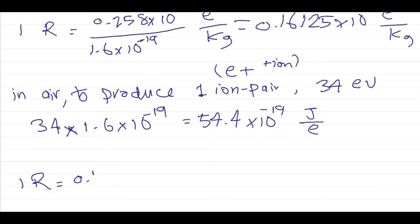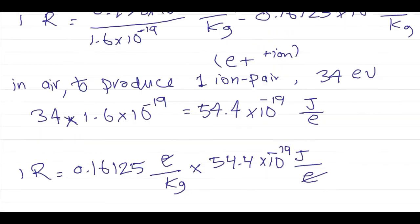We saw that equals 1.6125 times 10 to the 15 electrons per kilogram. So to get rid of this electron unit, we multiply by 54.4 times 10 to the minus 19 joules per electron.